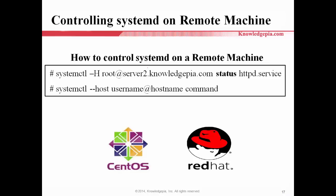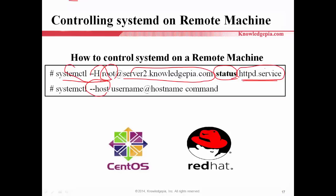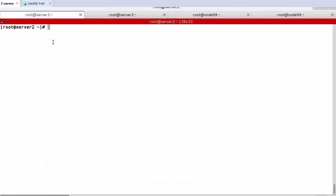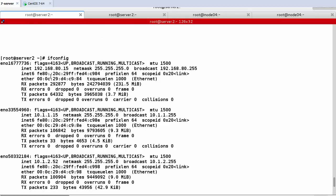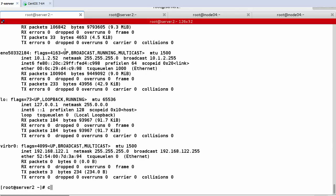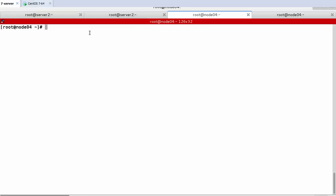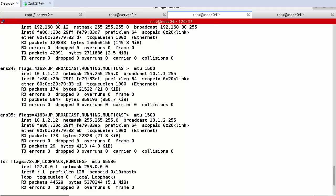The last topic is how to control Systemd on a remote machine — it's very simple. Use the -H option, meaning hostname, followed by username@hostname. For example: root@server2. This command will show the current status of a service from a remote machine. In my case, server2 has IP address 192.168.50.x, and for testing I also prepared host node4 with address ending in 8.12.